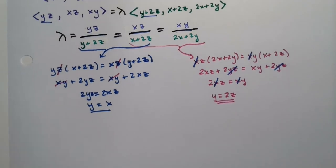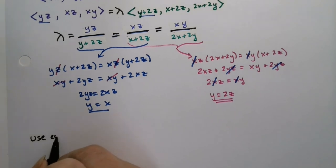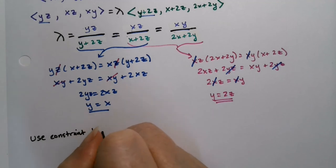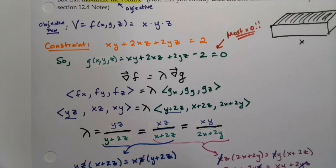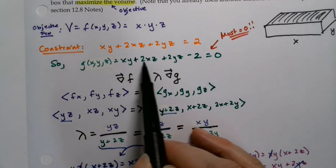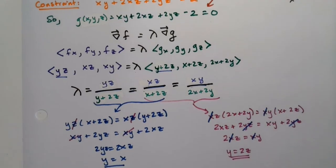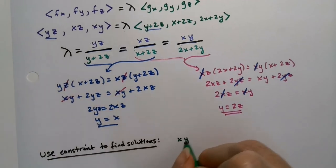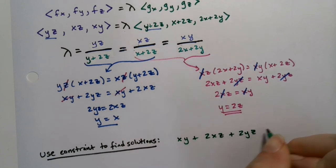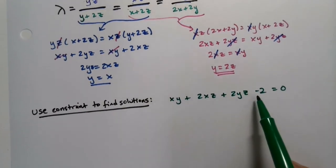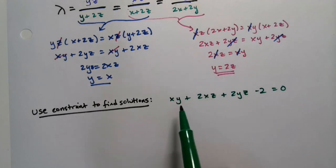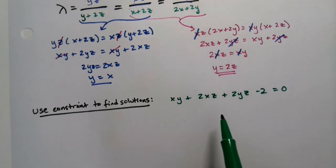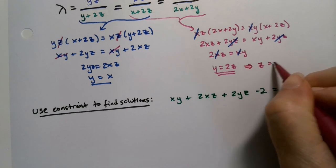Now, in the interest of thinking about this, I want to use my constraint to find solutions. Well, let's look at our constraint function. Our constraint is xy plus 2xz plus 2yz minus 2 equals 0. So what I want to do is there's three variables in one equation. So I want to take these other two equations and substitute and get rid of all the other variables. I want to make it so everything is x or everything is y, something like that. Well, let's make everything y.